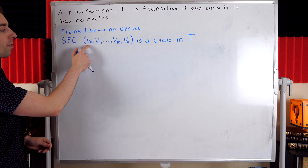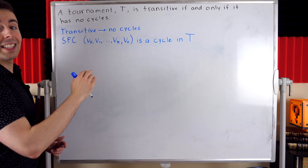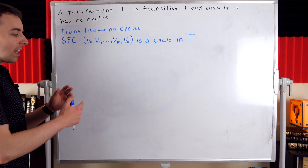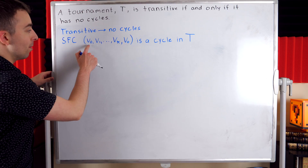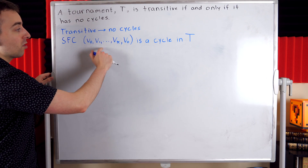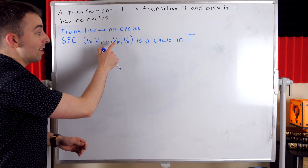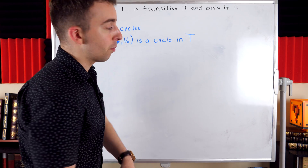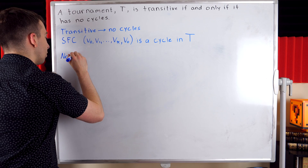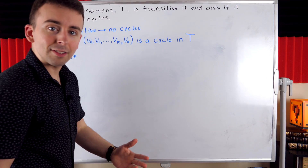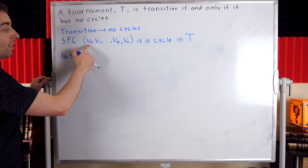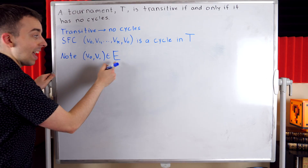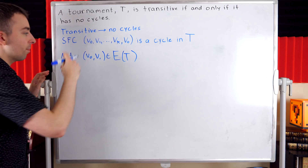This cycle starts at some vertex V-0, then goes to V-1, all the way up to some last vertex V-k, before returning to the vertex V-0 — since it's a cycle, that's how it works. In order to make the argument that V-0 is going to have to be adjacent to a bunch of the vertices on this cycle, and eventually it's going to have to be adjacent to V-k which causes the problem, we're going to do something like a mini induction proof. The base case is noticing that V-0 is adjacent to the first vertex on the cycle — so V-0 V-1 is an arc of the tournament T.